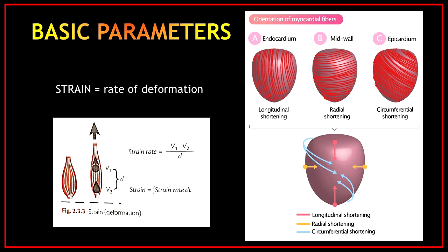Figure B shows the muscle fibers in the middle layer, which are oriented circularly around the short axis. Contraction in this muscle layer results in radial shortening, meaning that the diameter of the ventricular cavity decreases. The muscle fibers adjacent to the epicardium are oriented approximately 60 degrees in relation to the fibers of the mid wall.